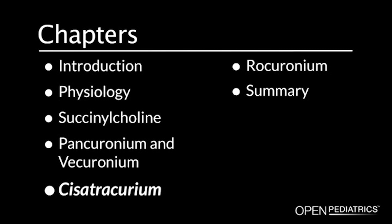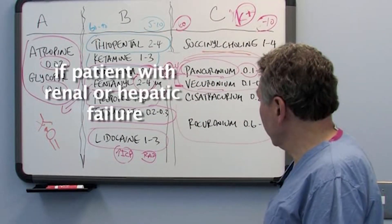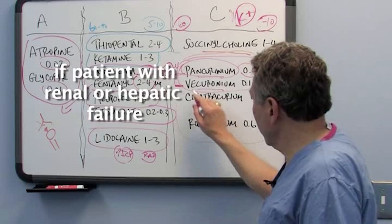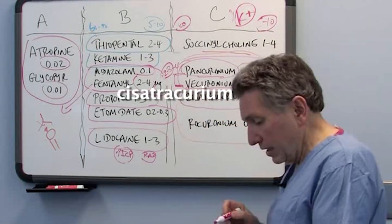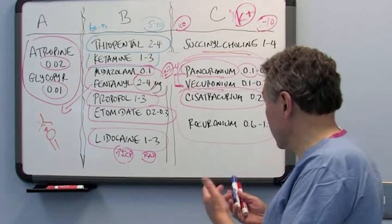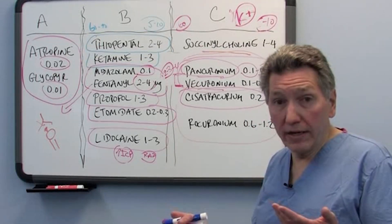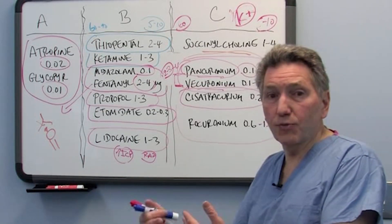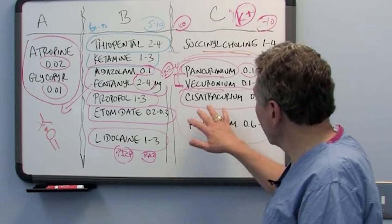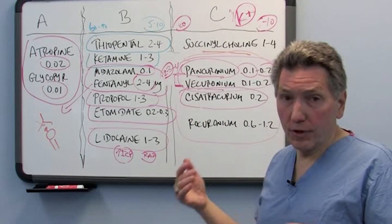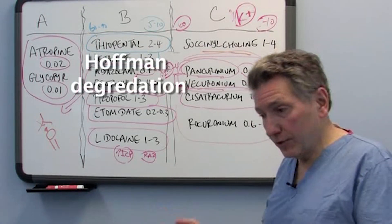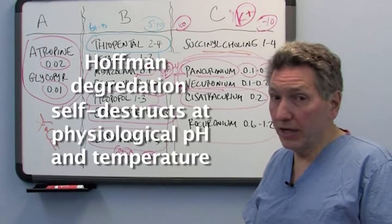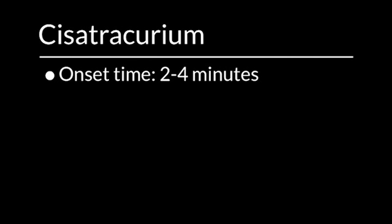If you have somebody in renal failure or hepatic failure, then you can consider your third alternative here, which is Cis Atracurium. Cis Atracurium is a different drug family. It's not a steroidal compound. It's really based on curare, and the initial drug was curare, and then it became Atracurium, and then it became Cis Atracurium as one of the isomers of Atracurium. It doesn't require either renal function or hepatic function. It has Hoffman degradation, which means that if you take the molecule, put it at physiologic temperature and pH, it self-destructs over a period of time. Typically the onset time for Cis Atracurium will be about the same as these guys, two, three, four minutes.